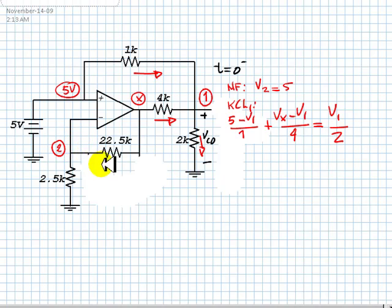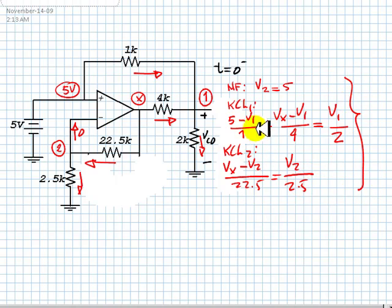And KCL 2 for this one has three components: this current, this current, and 0 amps because this is an ideal op-amp. KCL 2 is Vx minus V2 over 22.5 equal to 0 plus V2 over 2.5. We have three equations, three unknowns: V1, Vx, and V2, which is not really an unknown anyway.